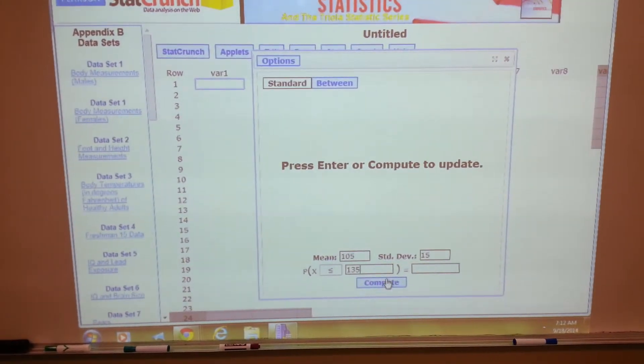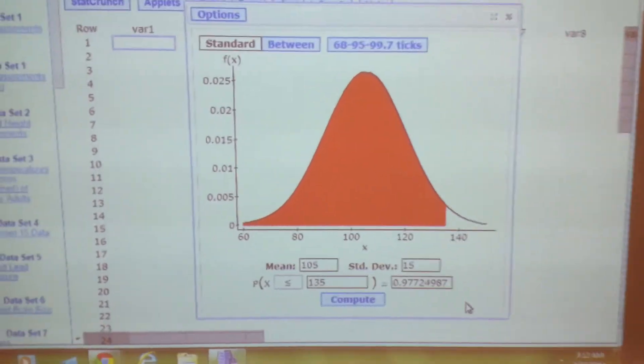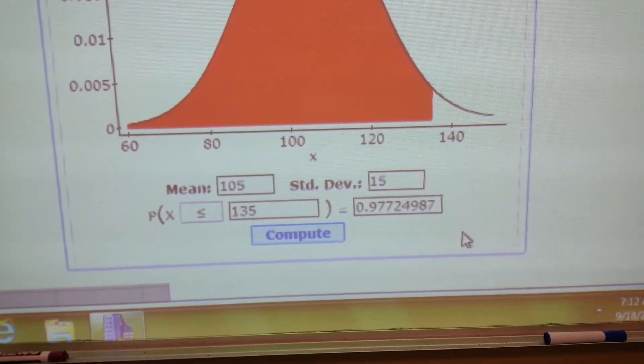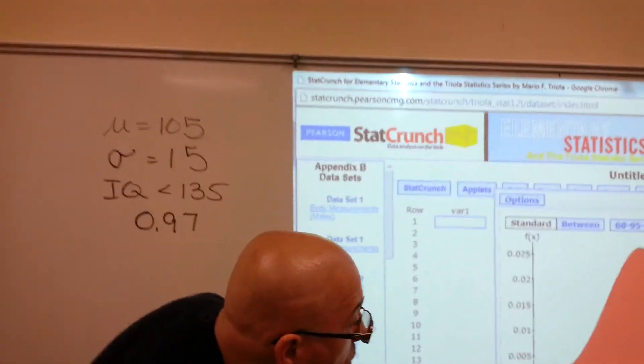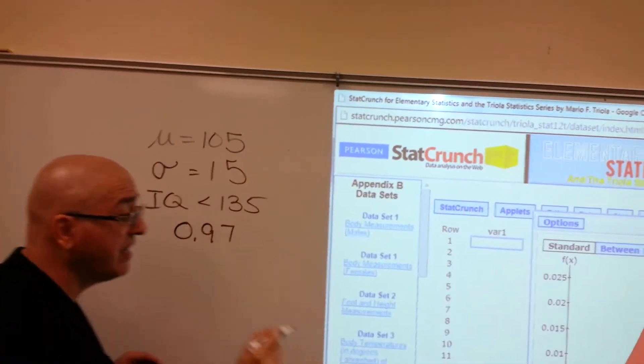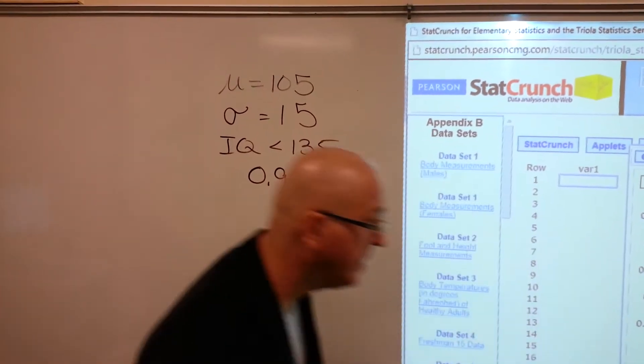And we'll say compute: 0.9772. So that's 0.97—oh wait, 9772. Is that rounded correctly? Four decimal places?